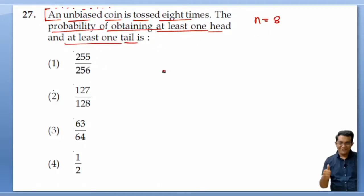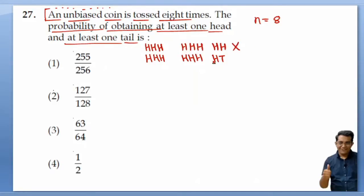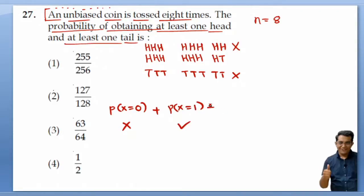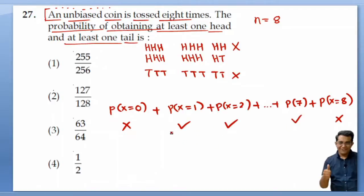When you toss a coin 8 times, the sample space includes outcomes like all heads or all tails. They are asking that there should be at least one tail and at least one head — so outcomes of all heads or all tails are not allowed. The favorable events are 1 head, 2 heads, up to 7 heads. So we want to find the probability from P(X=1) to P(X=7).